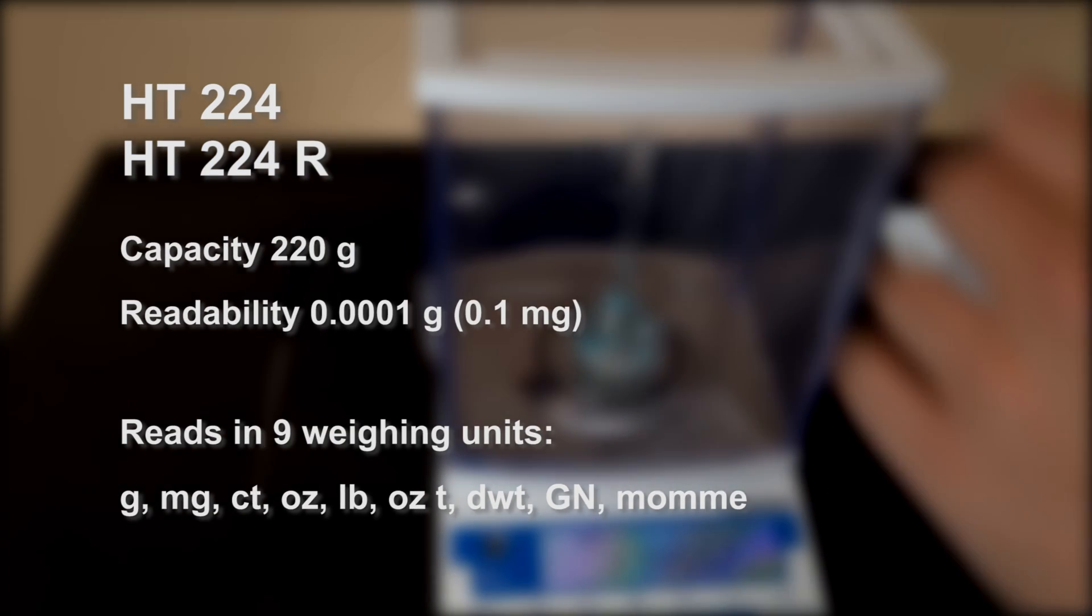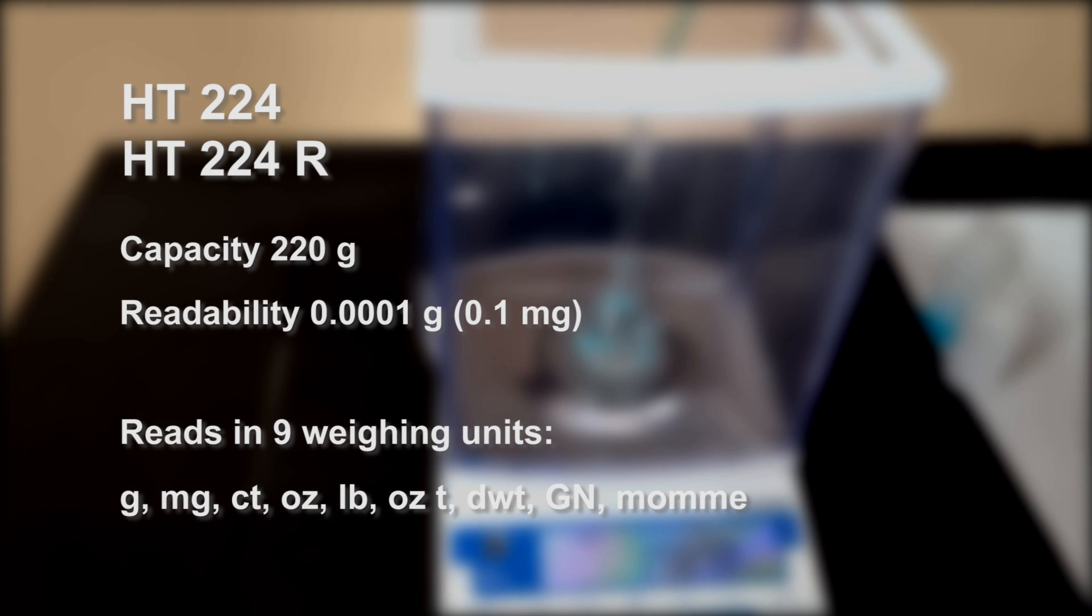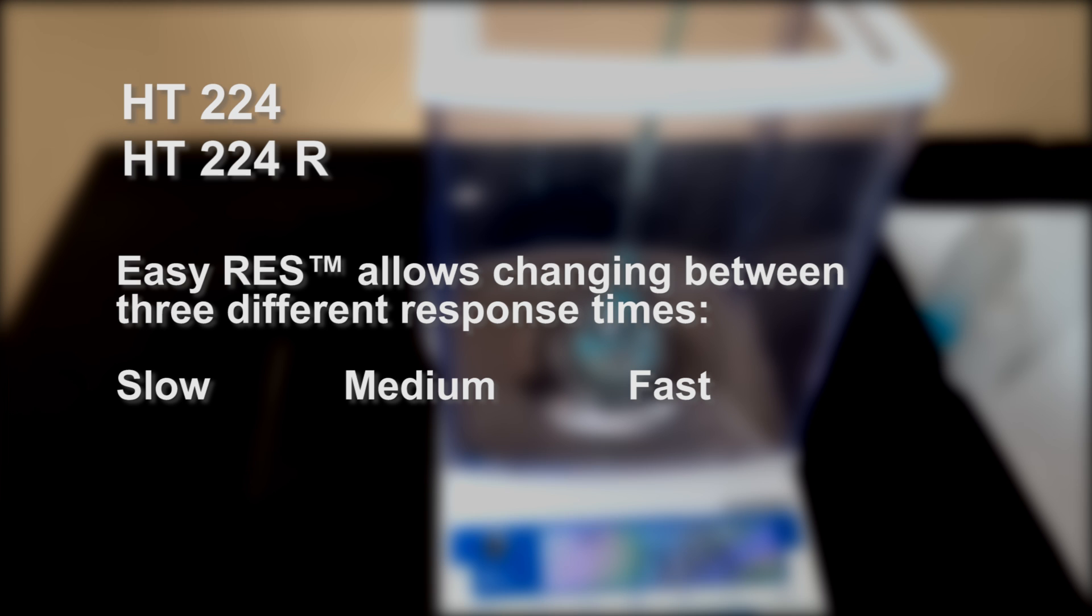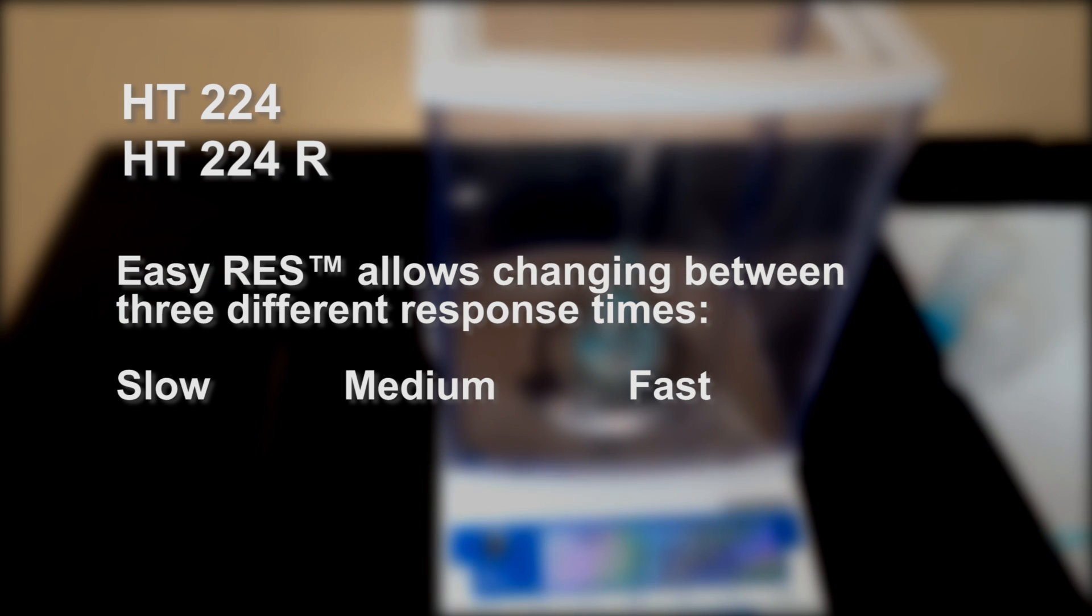The HT224R provides analytical weighing at 0.1 milligrams and reads in nine weighing units. EasyRes allows you to change between three response times to suit your application.